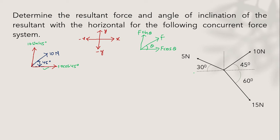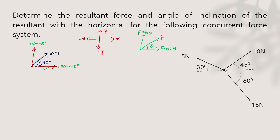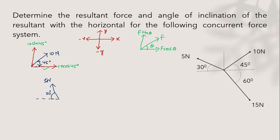Now for the 5 Newton force: it falls in the second quadrant, with an inclination of 30 degrees from the horizontal. In the second quadrant, x is towards the left (negative) and y is upward (positive). So the x component is minus 5 cos 30° and the y component is plus 5 sin 30°.